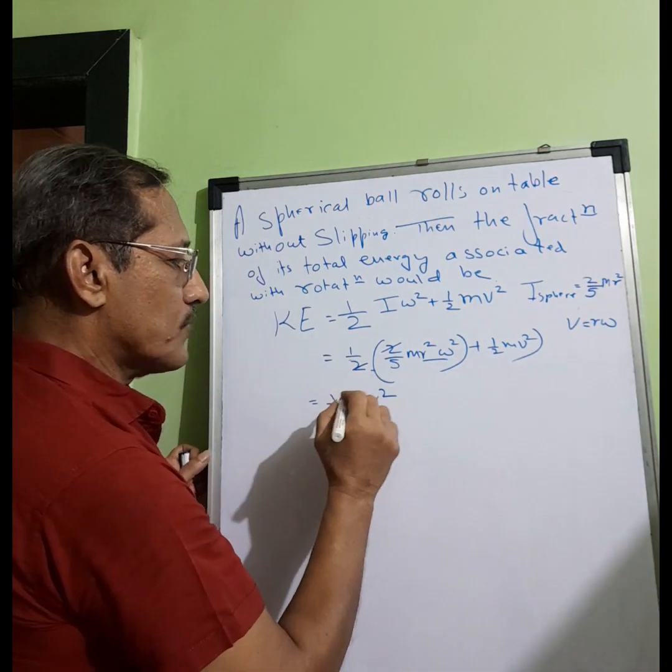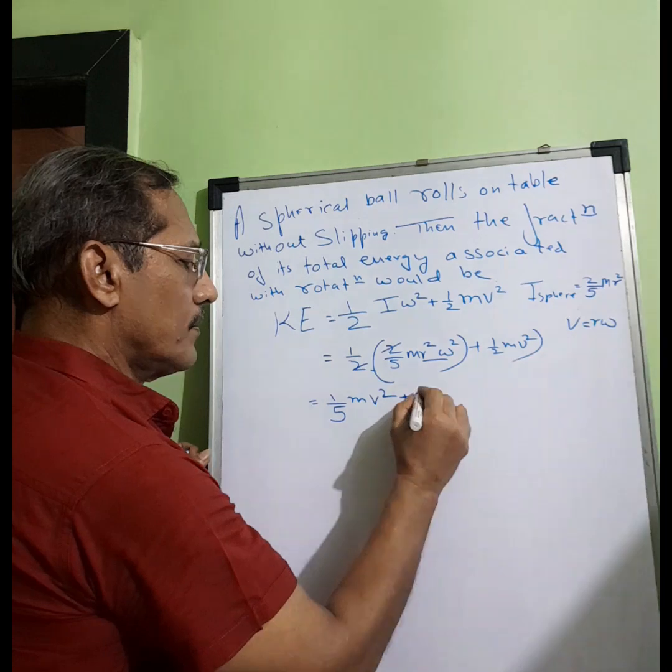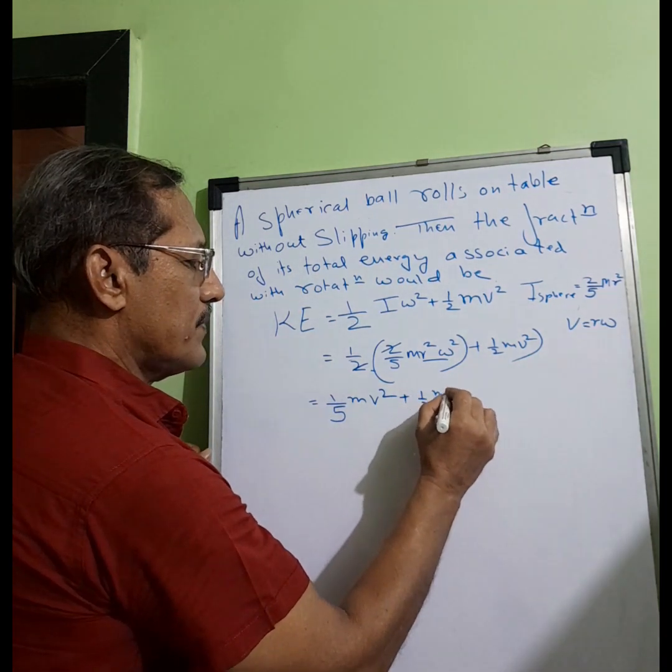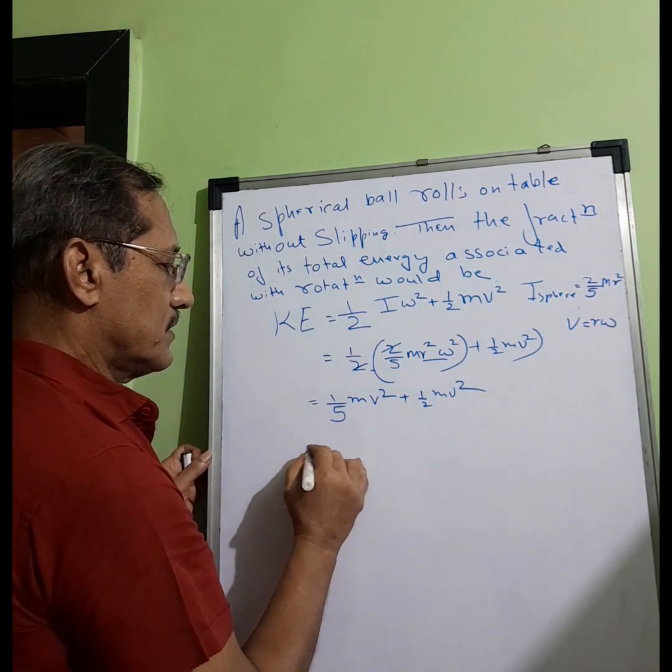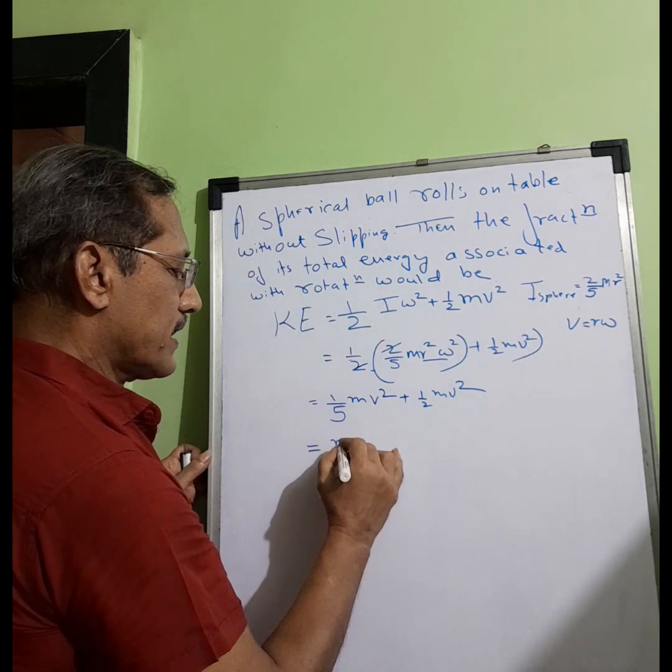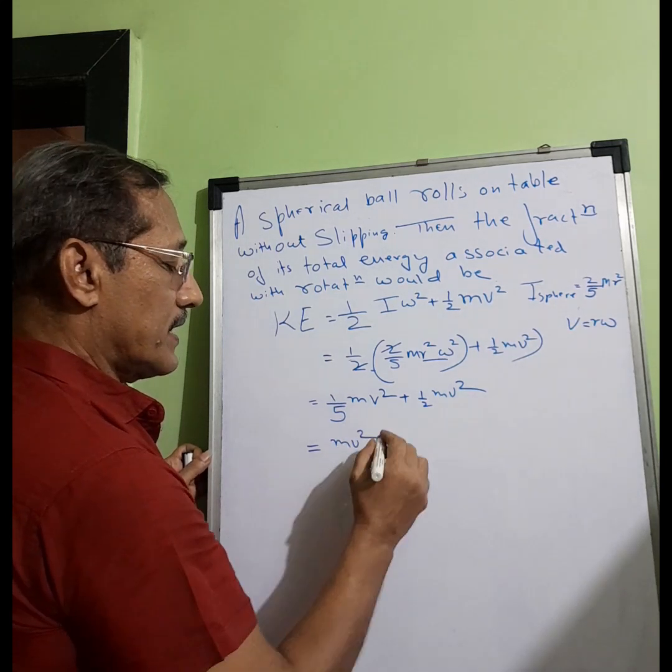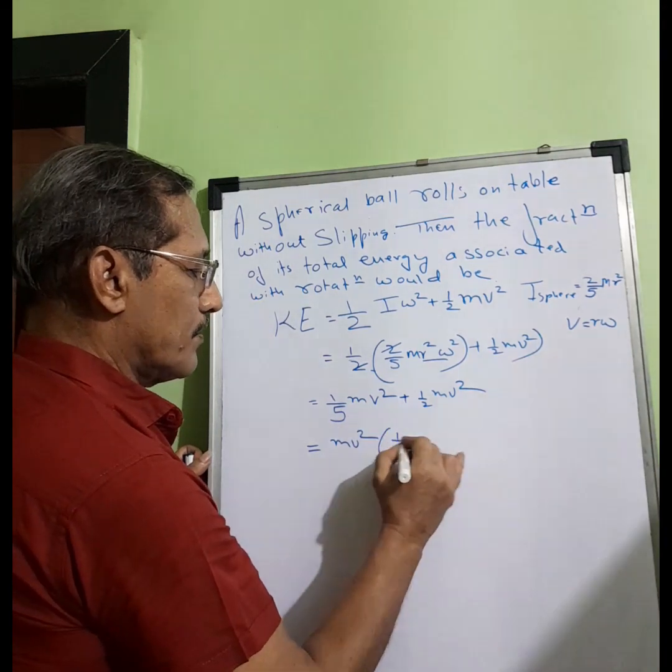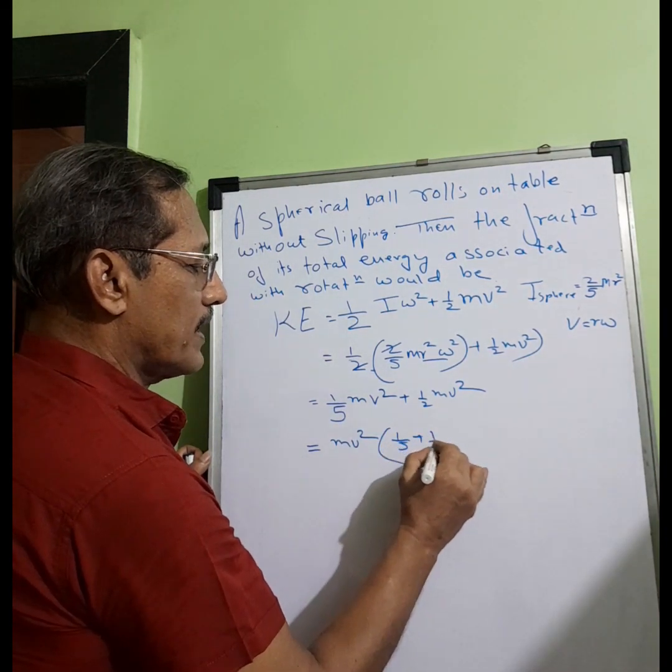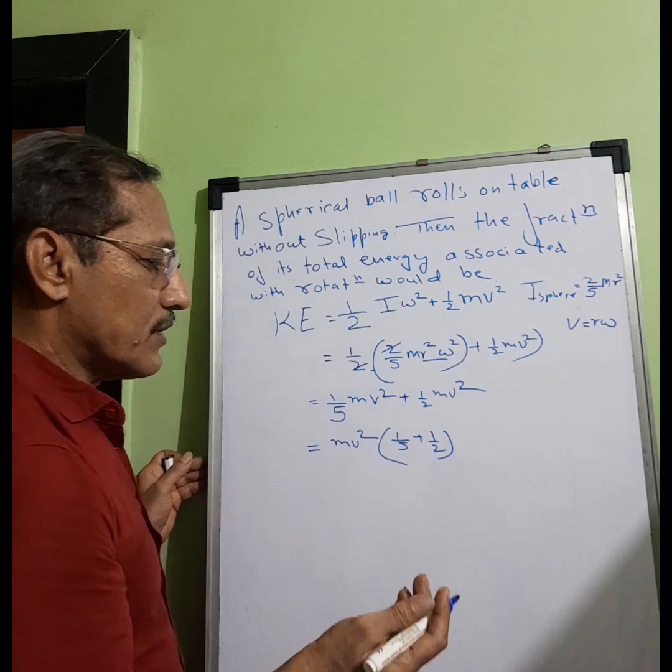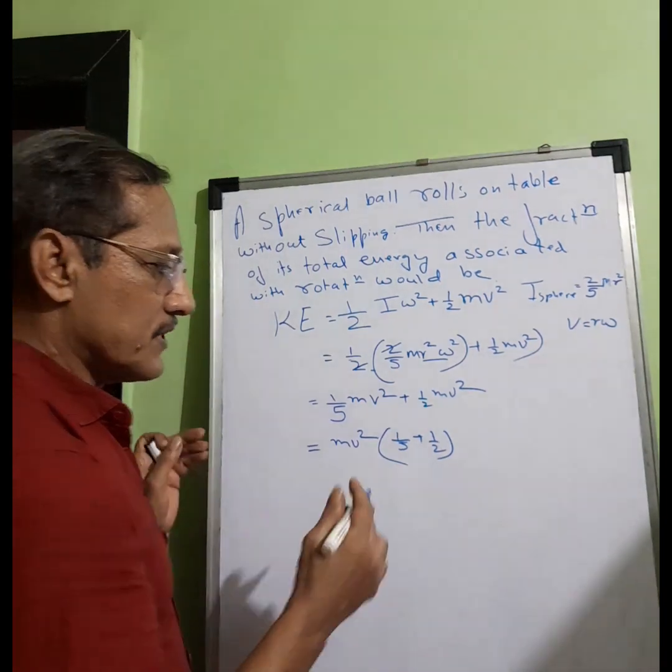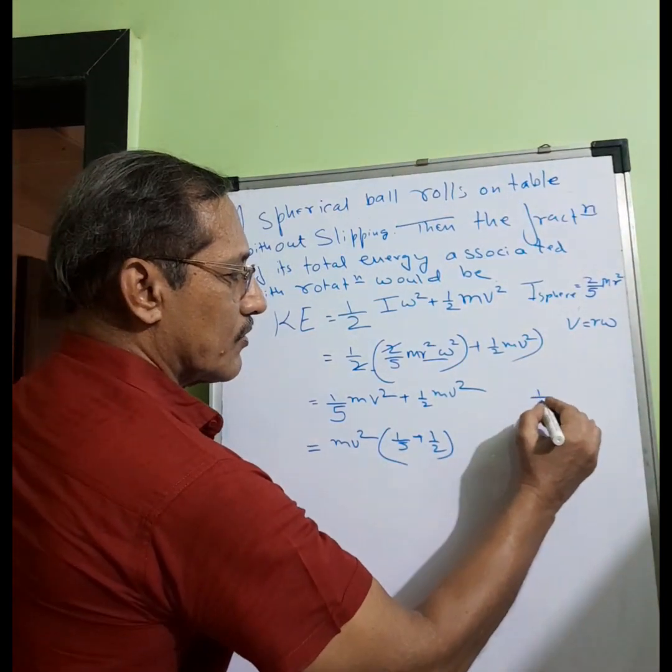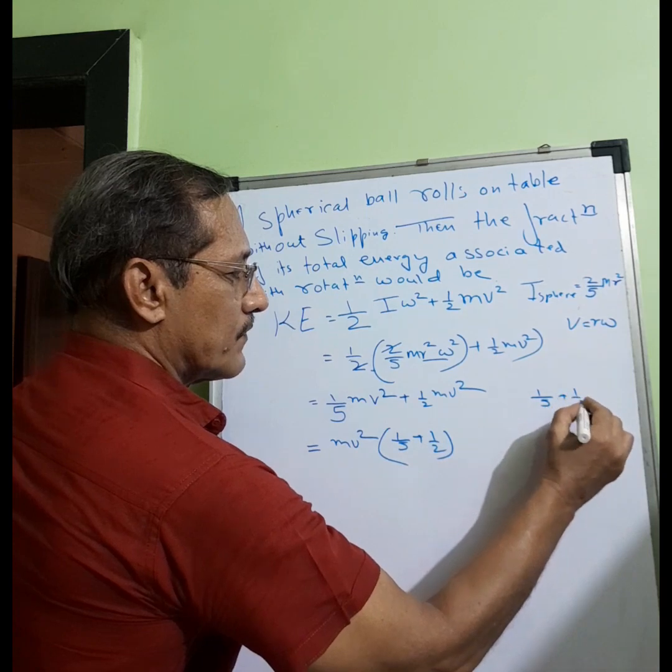Right, so this is mv² plus 1/2 mv². So obviously mv² can come out. And what we are left with inside is 1/5 plus 1/2, which becomes equal to... Now if we take LCM, I hope you have not forgotten.